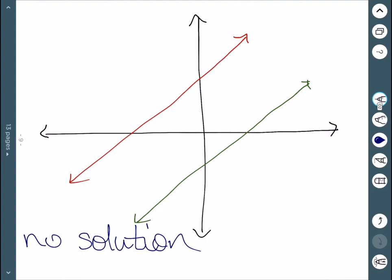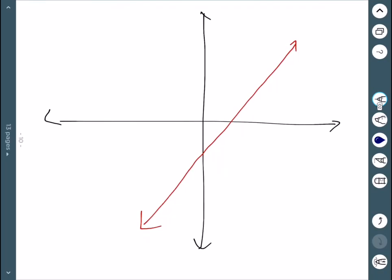The third case would be if we graph them and they're actually the same line. In this case, there are infinite solutions because they intersect infinitely many times. They intersect at every single point on the line.